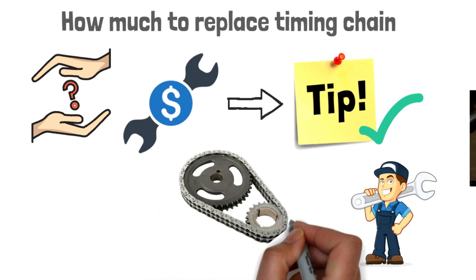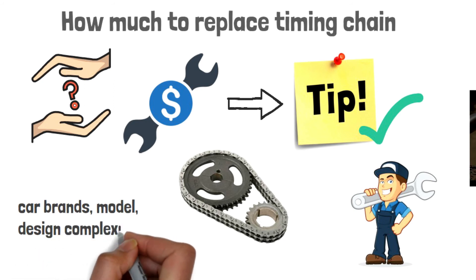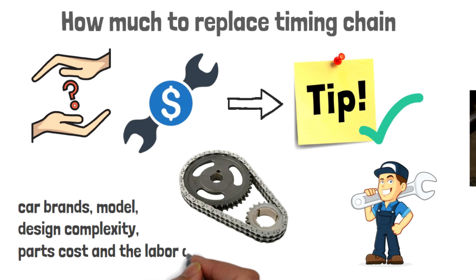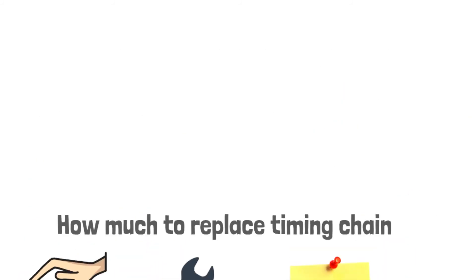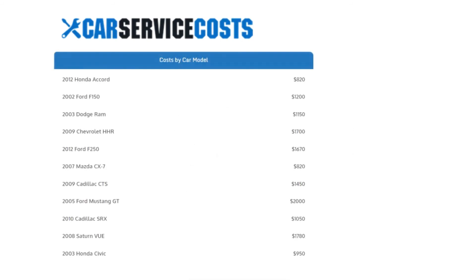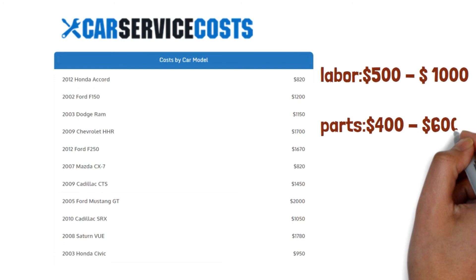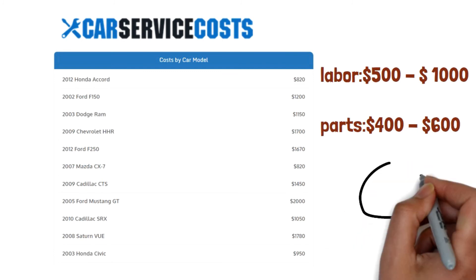The timing chain replacement cost varies depending on the car brand's model, design complexity, parts cost and labor cost in your city. Thanks to the car service cost analysis, they list out the reference cost for timing chain replacement. The labor cost are about 500 to 1000 dollars while the parts are about 400 to 600 dollars. Looks like the American muscle cars tend to have higher replacement cost.